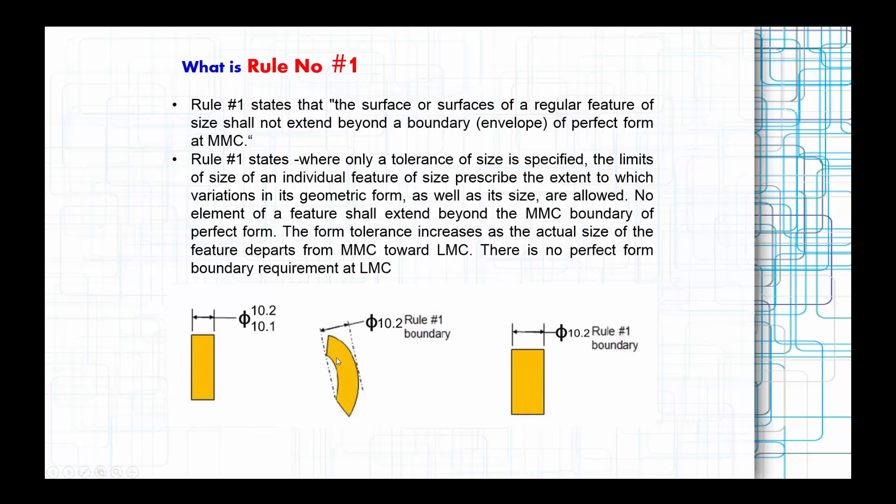This form could be cylindrical but still could tilt, could bend, and still comparatively can fit within that boundary. That is what Rule Number 1 says. The surface or surfaces of a regular FOS feature of size, whatever that could be a shaft or a hole.